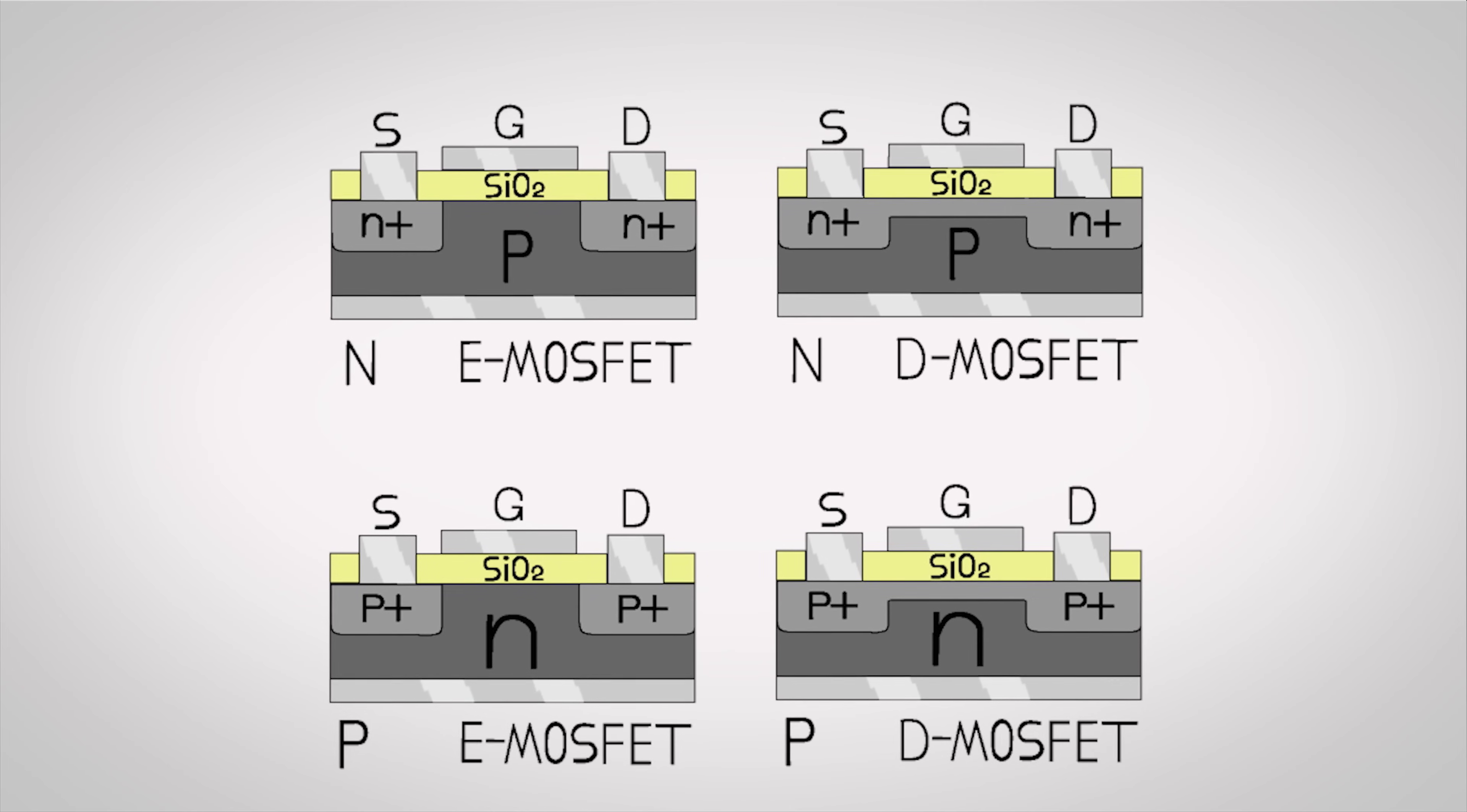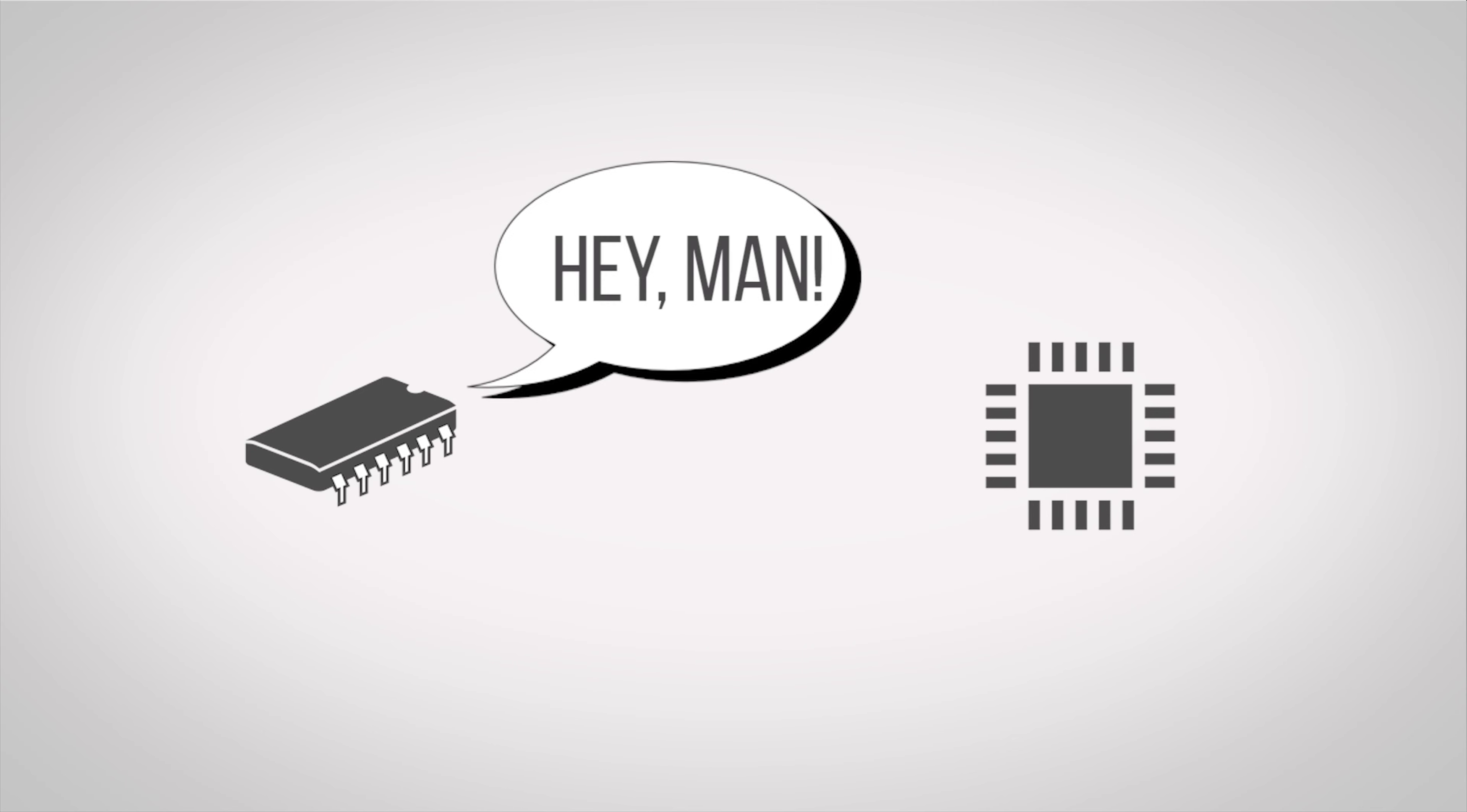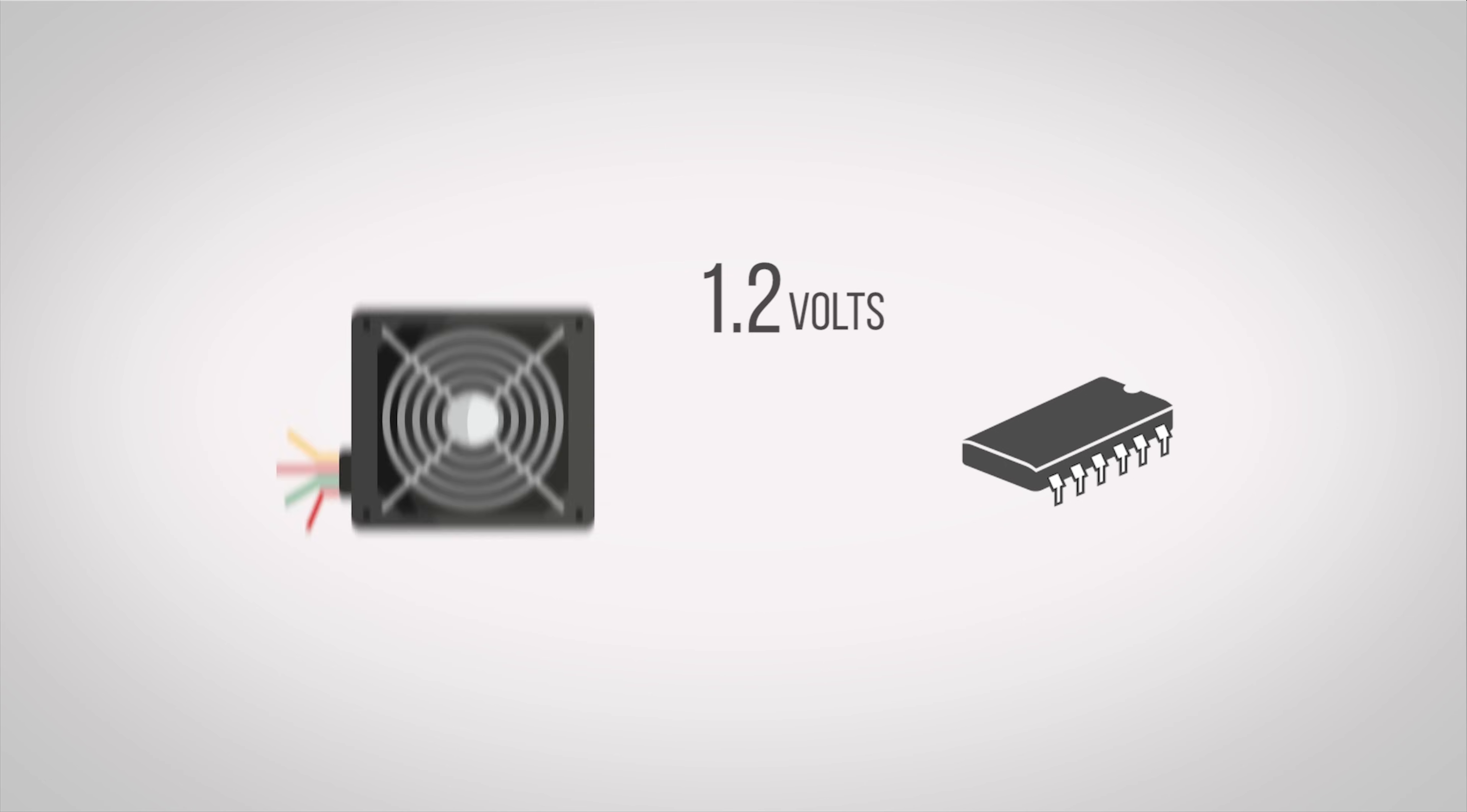Since transistors can both change voltages and have logic gates, your MOSFETs and CPU actually talk with each other to figure out the correct amount of voltage to deliver to the CPU at any given time. Then the MOSFETs take the electricity from your power supply, adjust the voltage, and pass it through the chokes and onto your processor.